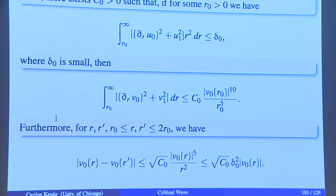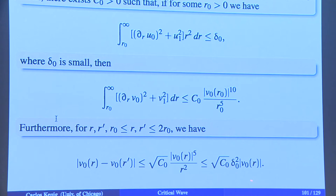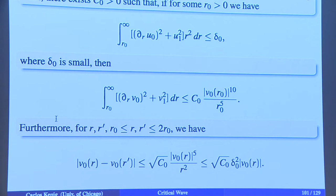Then I can bound the outer H¹ × L² norm in terms of V₀ to the fifth divided by R₀ to the fifth — corresponding to the fact that the nonlinearity is U to the fifth. The differences in V₀ can be controlled by this, and in turn by that. These bounds follow from the fundamental theorem of calculus and Cauchy-Schwarz. For the passage from the top to the second inequality: V₀ to the fifth over R² equals V₀ times V₀⁴/R², and V₀⁴/R² = (V₀²/R)², while V₀²/R = R·U₀(R), controlled by the delta-naught expression, giving delta-naught squared.